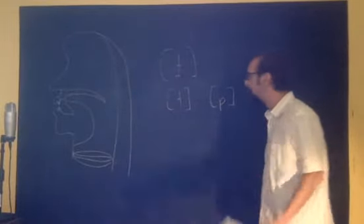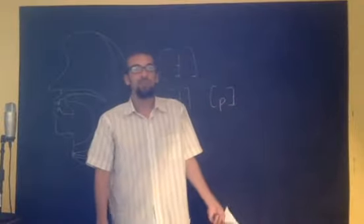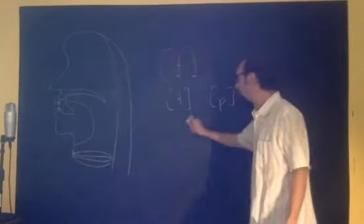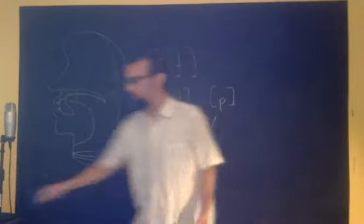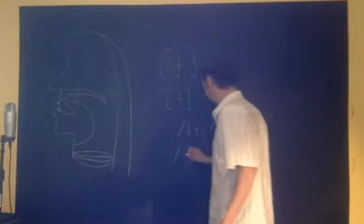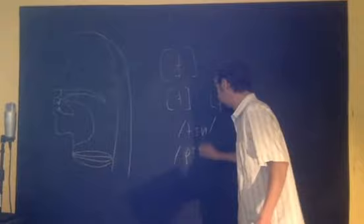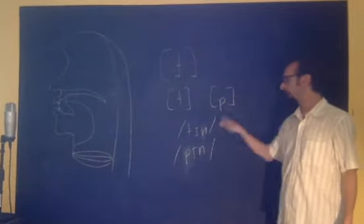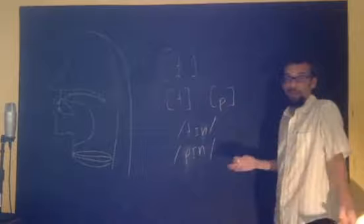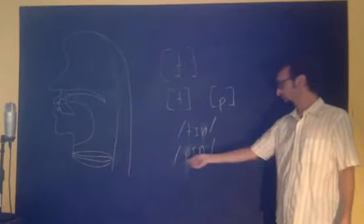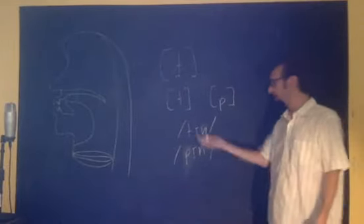But we also need to remember which morphemes have which sound in them. In our mental lexicon that we learn when we're learning a language, we need to be able to distinguish words like tin from words like pin.